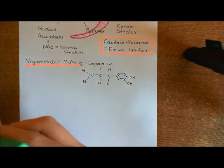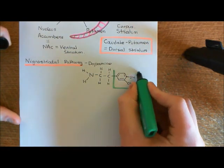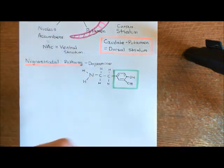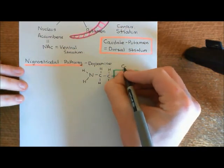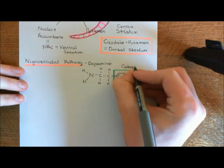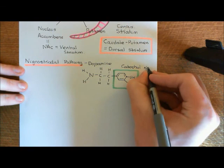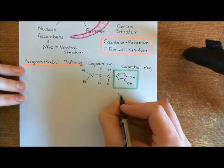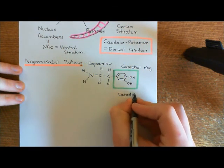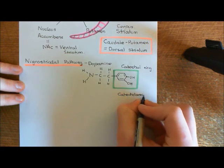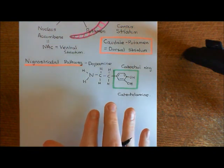The benzene ring with the two alcohol groups coming off it — that is the catechol ring. It is for this reason that dopamine is often described as a catecholamine, because it has a catechol ring within it and it also has an amino group. So that's the structure of dopamine.